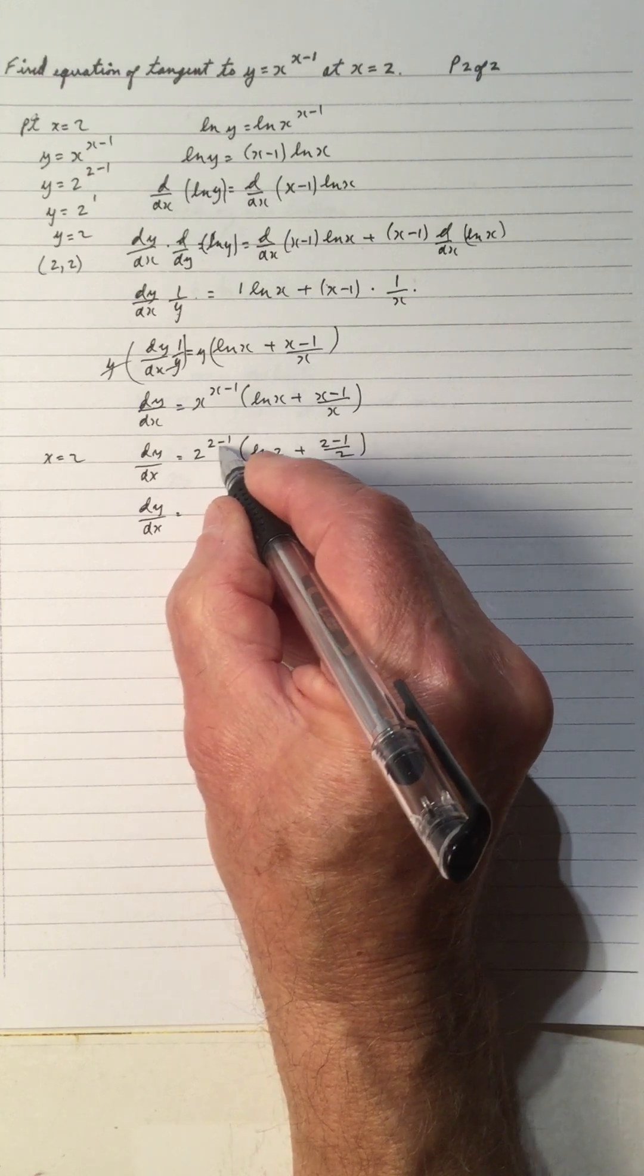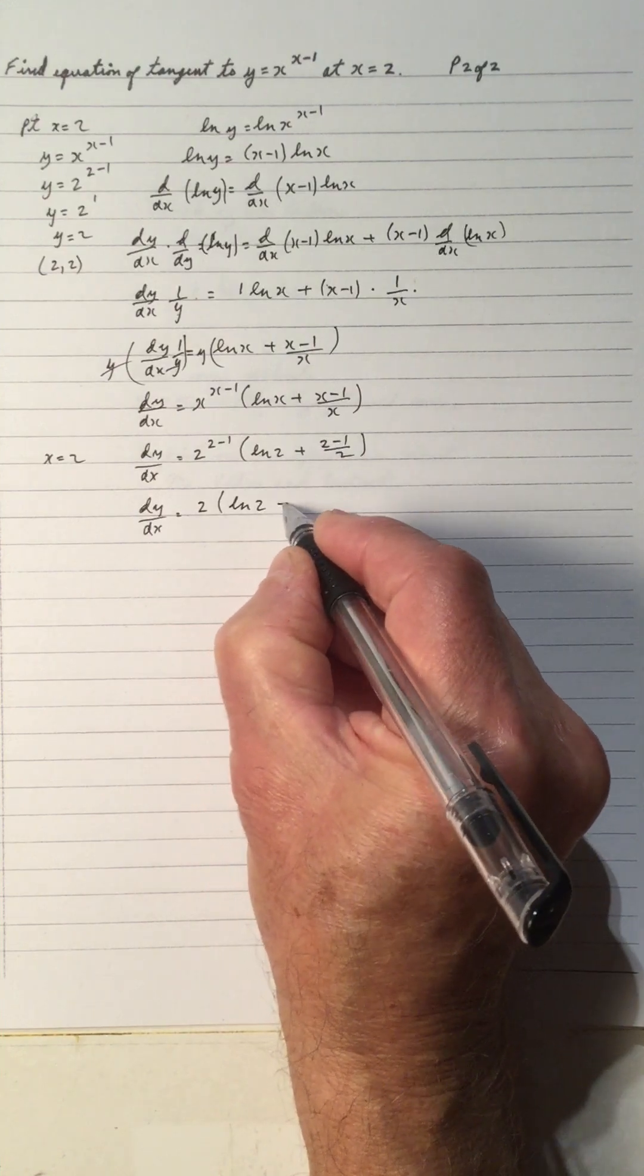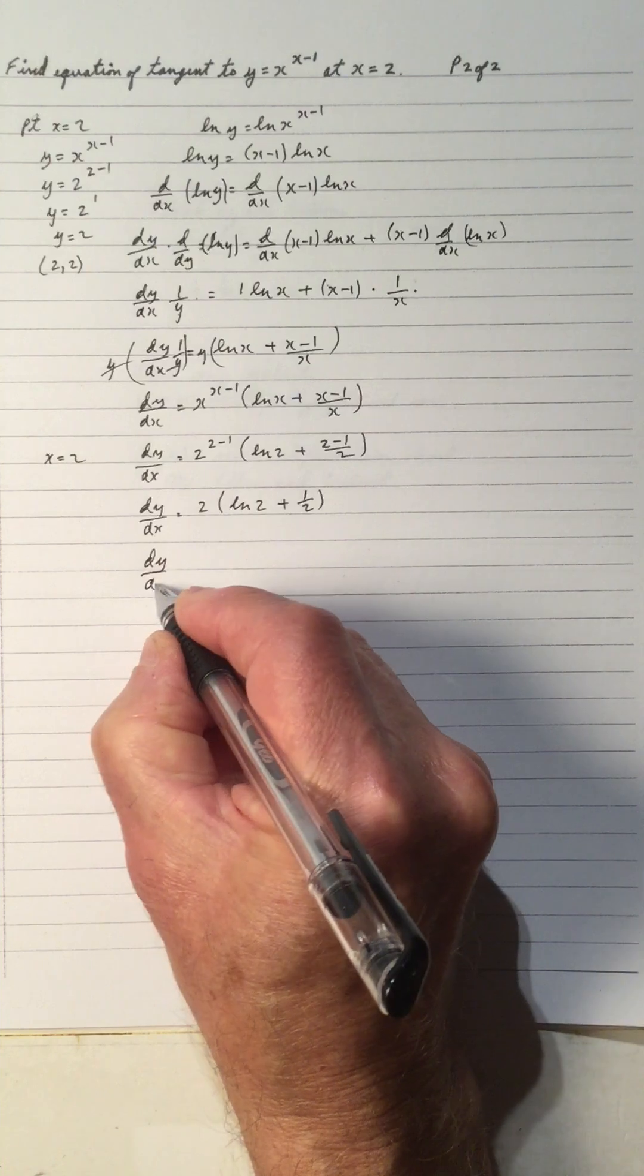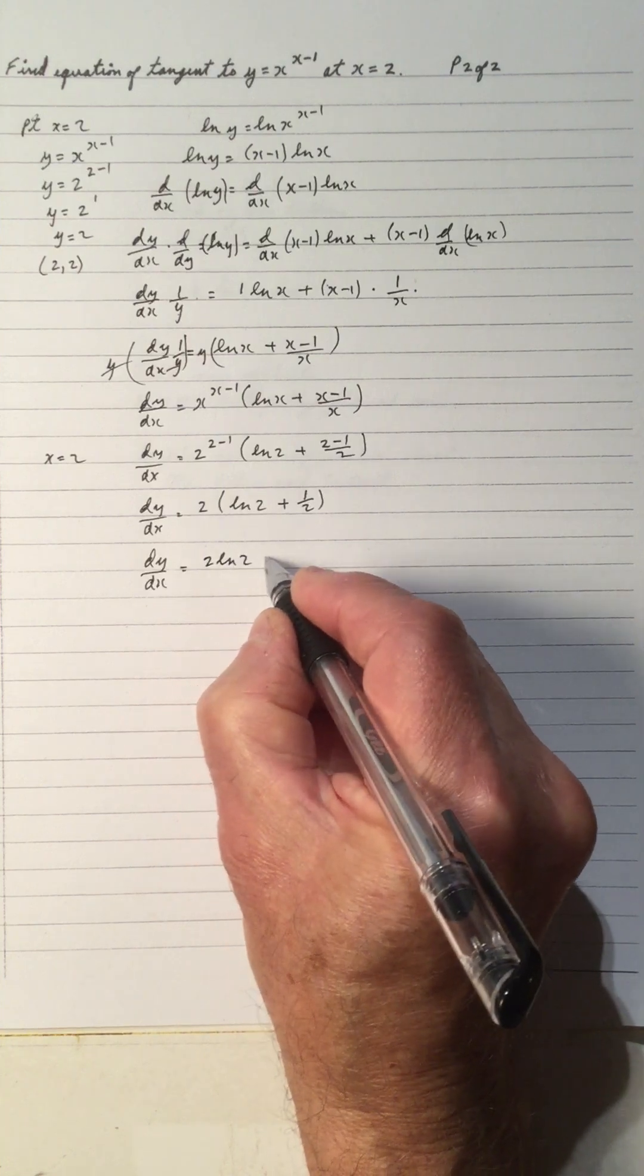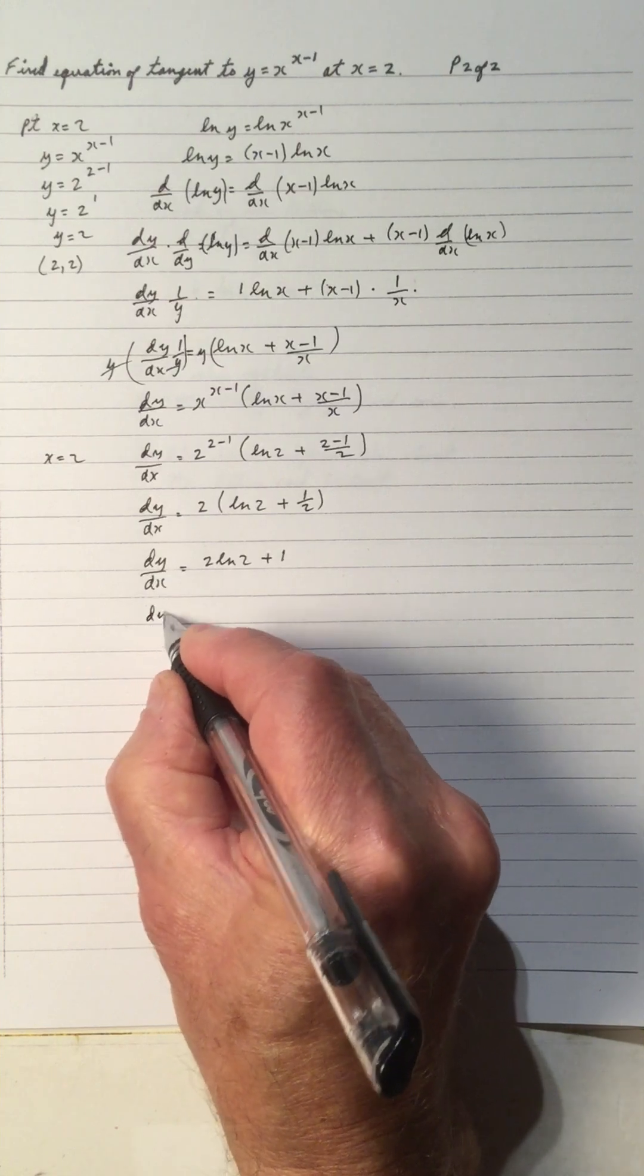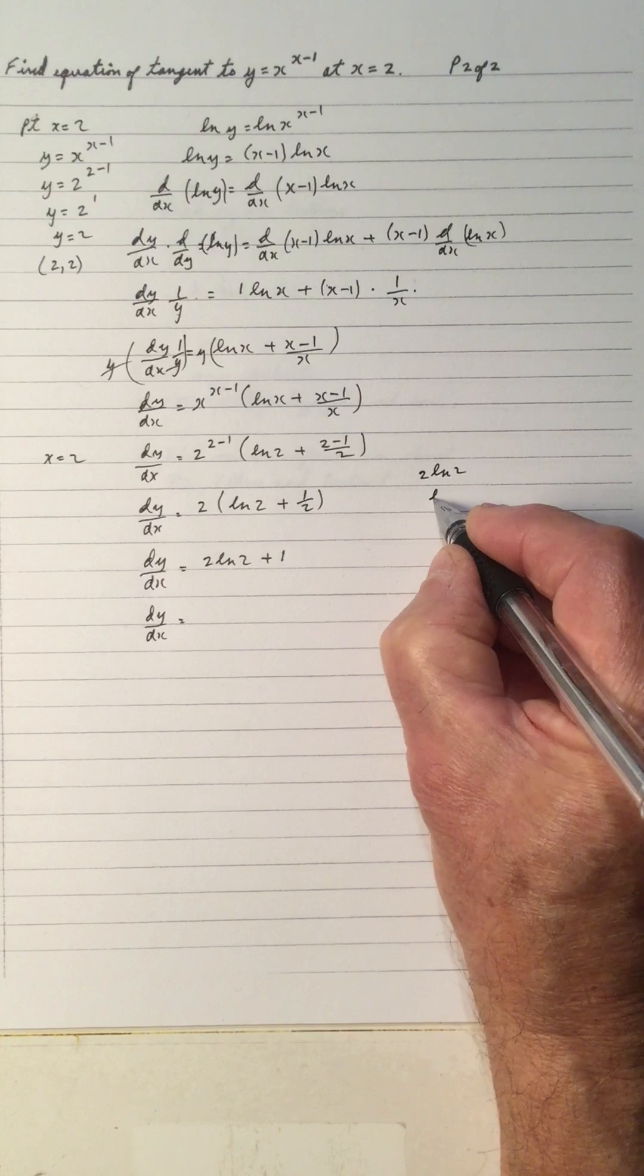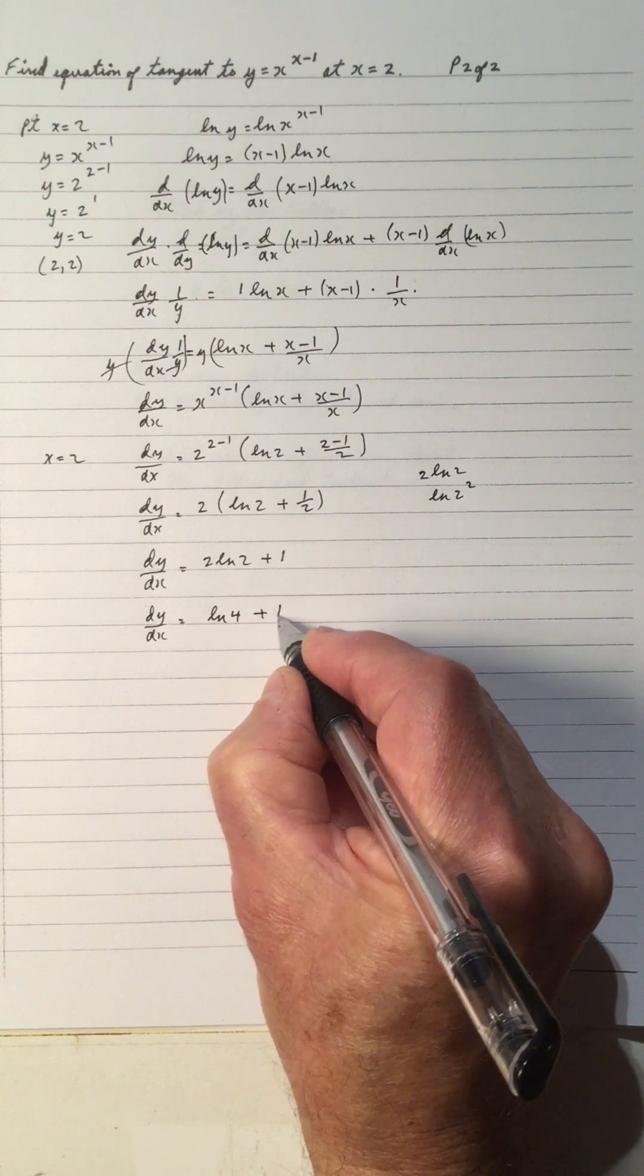So now we do the exponent. 2 minus 1 is 1, 2 to the 1 is 2. ln 2. 2 minus 1 is 1, so that becomes 1 half. dy dx. 2 times ln 2 is 2 ln 2. 2 times a half is 1. So dy dx, and 2 ln 2 becomes ln 2 squared, so that's ln 4 plus 1.